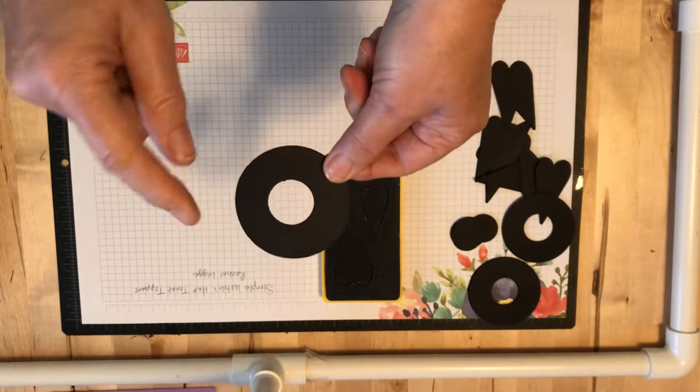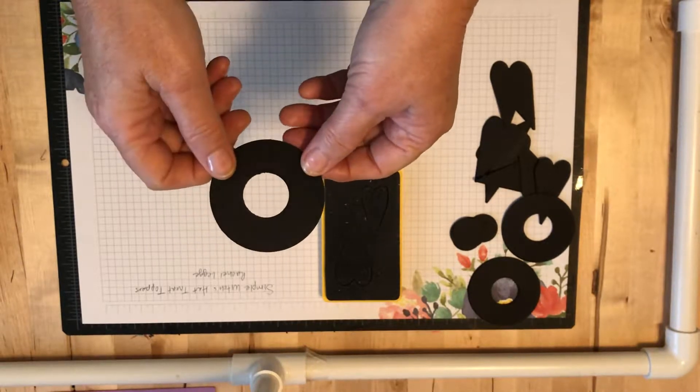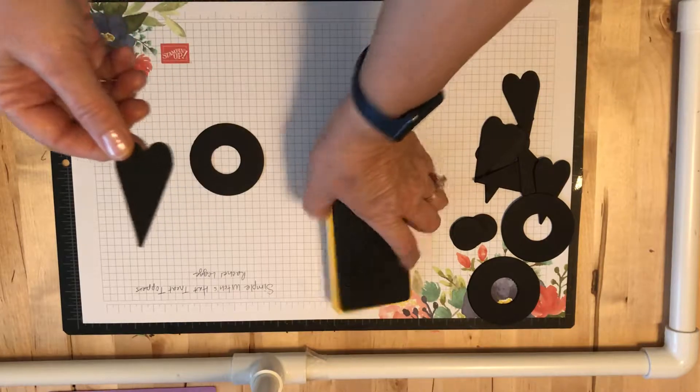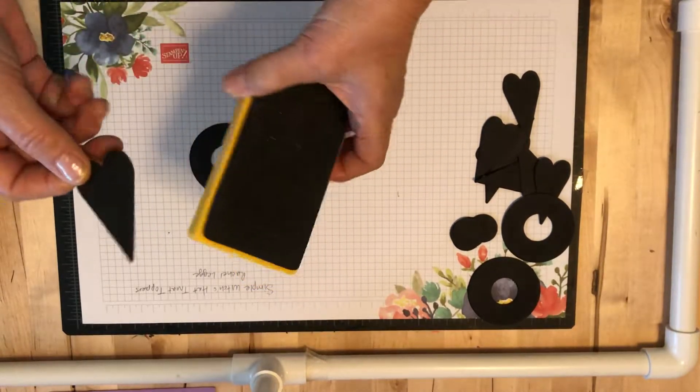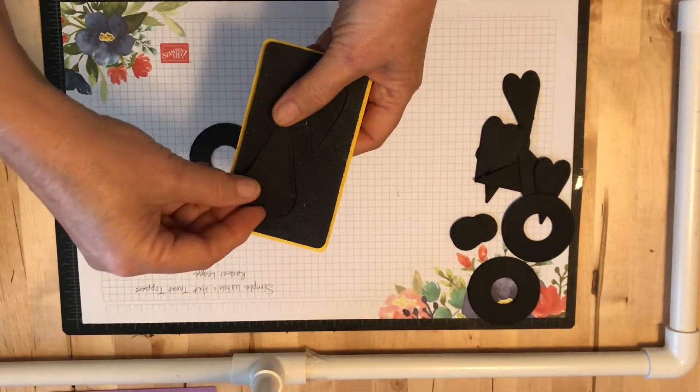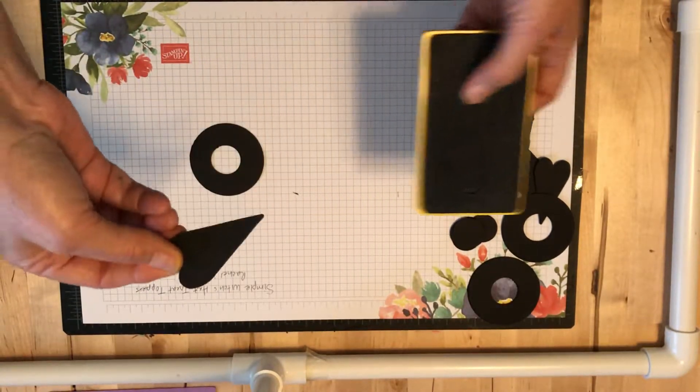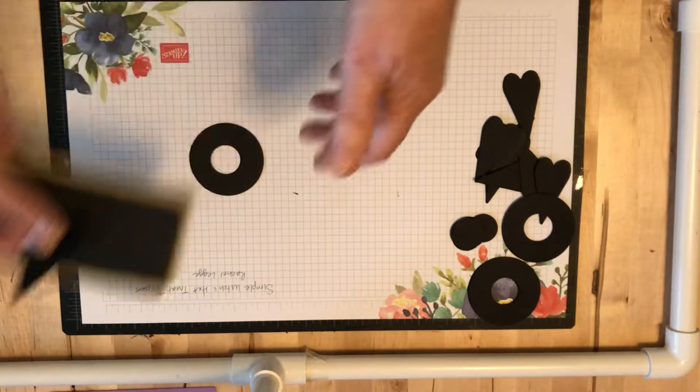She then took the triangle Christmas tree punch and punched out, but I don't have that one so I found a heart punch. If you can see, this is an older Sizzix die that I have, and I just punched out the circles because all I really needed was the triangle on top.